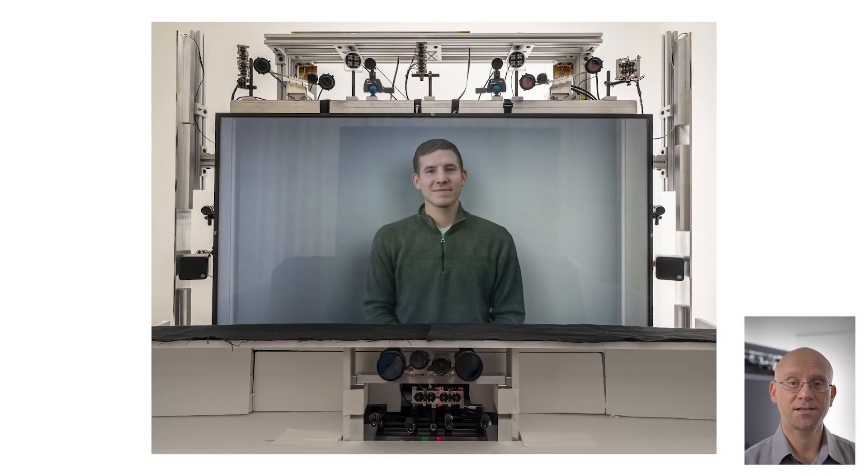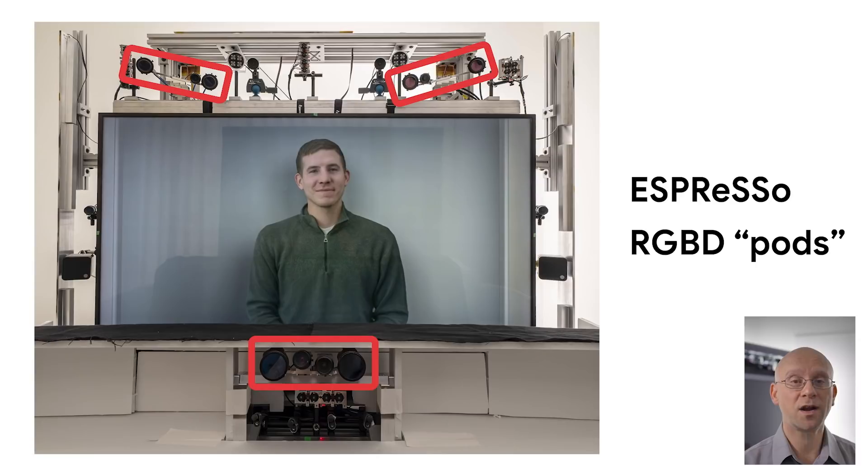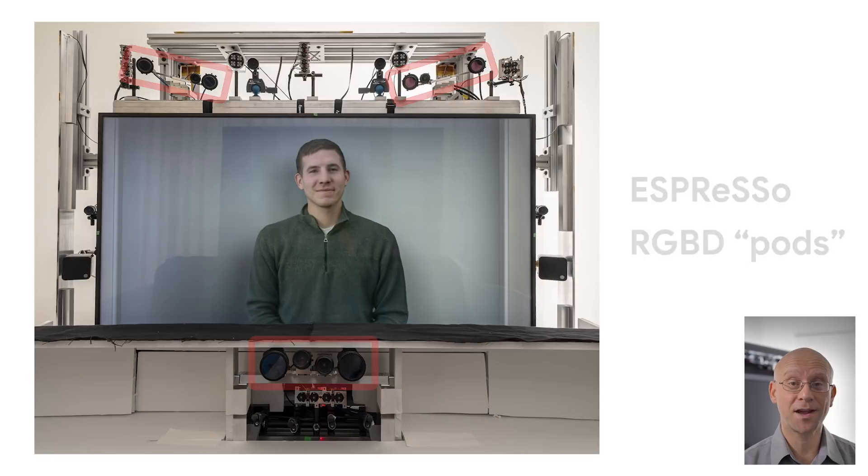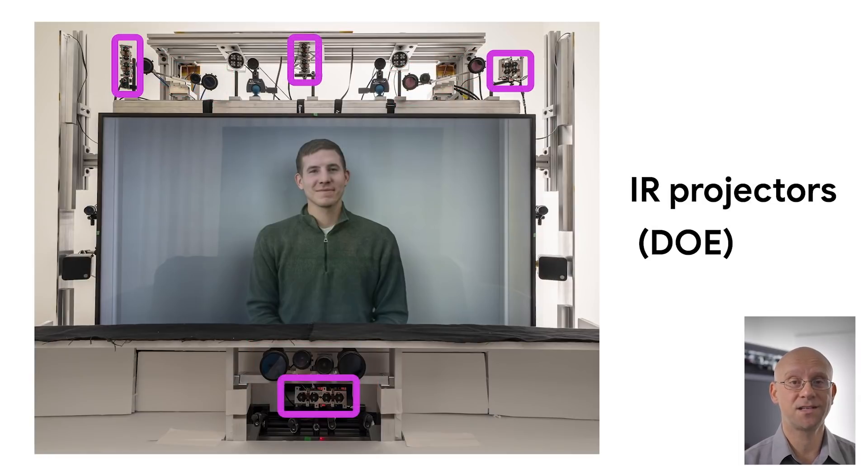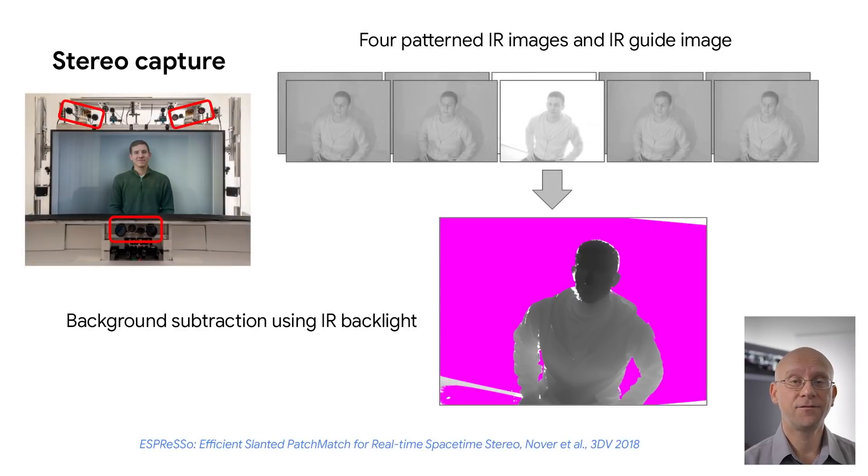To capture a 3D video of the subjects, we use three groups of cameras we call pods, each with two infrared cameras and one color camera. The bottom pod contains an extra color camera zoomed into the face for higher resolution there. For stereo reconstruction, we use time-varying infrared pattern generators that create dot images only visible in infrared. We use windows of five infrared image pairs, four with dot patterns and one with an infrared backlight, to compute depth from spacetime stereo using the Espresso algorithm we shared at 3DV 2018.